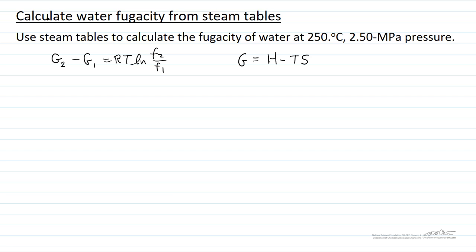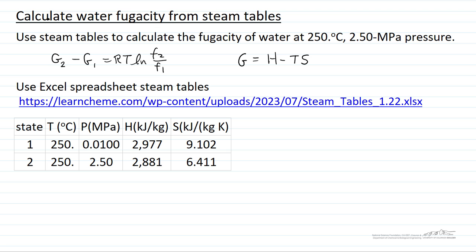So let's look at the steam tables and look at the values. So here are the values from steam tables. I use this Excel spreadsheet on the LearnChemE website. And remember this condition, fugacity 1 is equal to pressure 1, which is 0.010 megapascals.